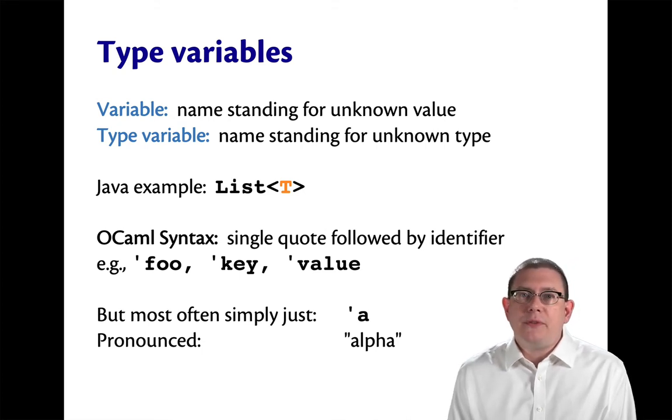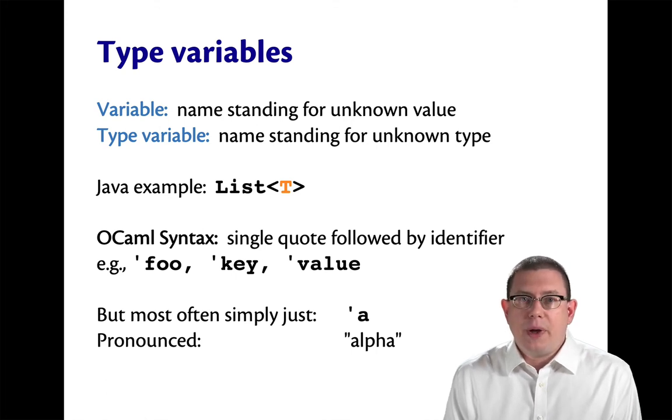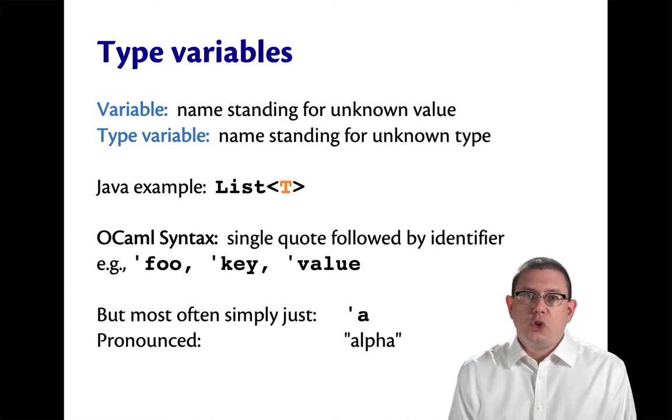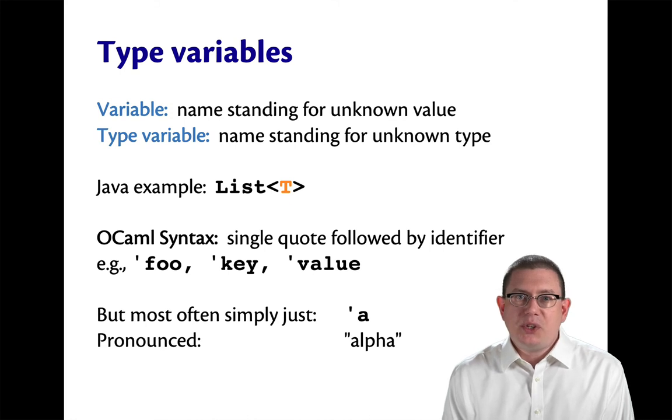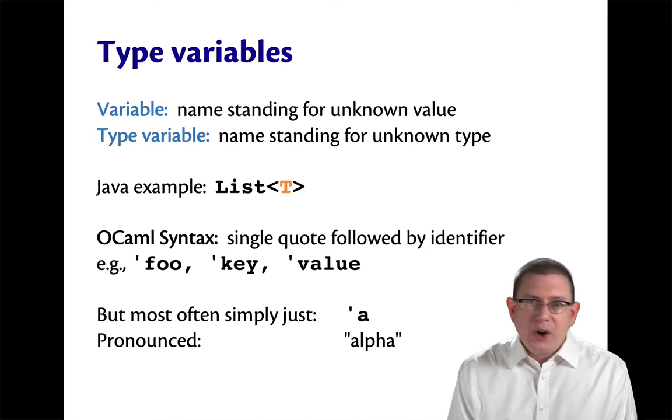But most often the simplest type variable we ever write is just going to be tick a. And for that form of type variable, OCaml programmers usually use Greek pronunciation. So instead of tick a, we'll say alpha. Instead of tick b, we'll say beta. Instead of tick c, we'll say gamma. And then rarely do we really go on to more than three type variables inside of a given expression.